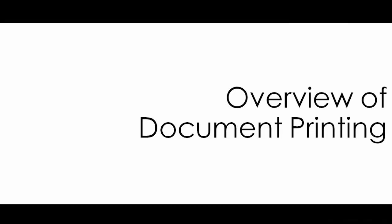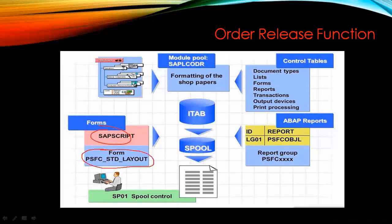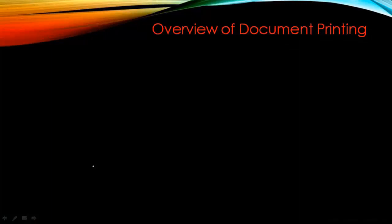Overview of document printing: in SAP, from the customizing point of view, we have different types of printing available. We can use SAP Script for printing, or we can use a PDF layout for the printing purpose. SP01 is a transaction where you can see the spool — whatever has been printed, you can check in SP01 to have a preview of what was done and at what time. Let's see more details about printing the shop floor paper.